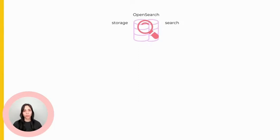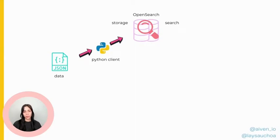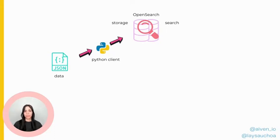How does the communication work? OpenSearch supports communication via a JSON-based REST API over HTTP or HTTPS. You can also use any programming language that has an OpenSearch client, which gives you access to a variety of methods. We will use Python because it's JSON-friendly and beginner-friendly. OpenSearch also has support for other languages including JavaScript and others.